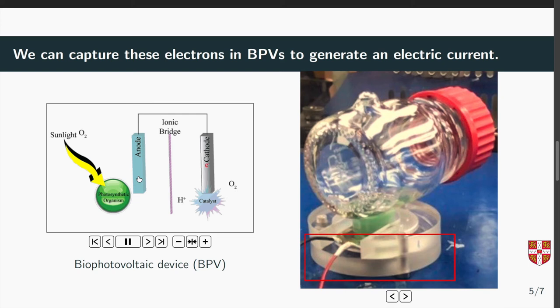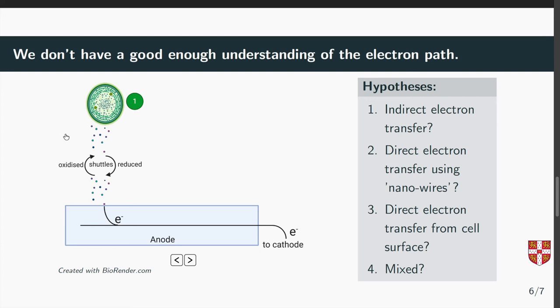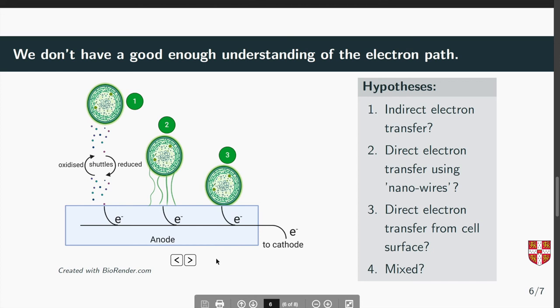We have a few hypotheses on how this occurs. One, it might be an indirect transfer using shuttles which travel from within the cyanobacteria to the anode, deposit electrons and then travel back to the cyanobacteria. It could be a direct electron transfer using nanowires which extend from the cyanobacteria outer cell membrane. Or it could be a direct transfer from directly from the cell outer membrane onto the anode. It could also be a mix of all four processes.